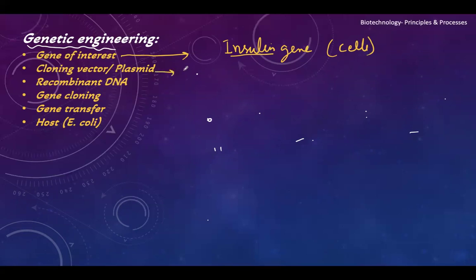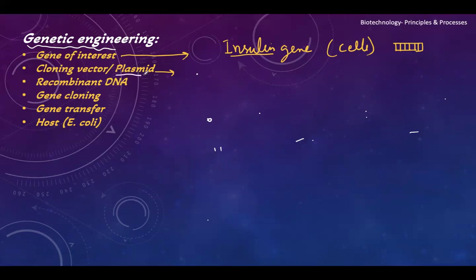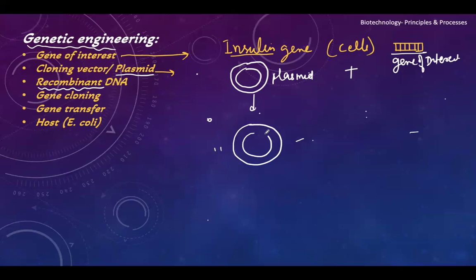Then we need to find a cloning vector. When I have to put this gene into bacteria, I need a cloning vector because this DNA cannot multiply and cannot remain in the bacteria by itself. That vector is nothing but a plasmid — these are self-replicating bodies. I have taken the gene of interest and the plasmid, also called a cloning vector. Next is forming the recombinant DNA — by taking two DNA from different sources and combining them together. I insert the gene of interest, which is the gene of insulin, into the plasmid. These are two DNA from different sources, and that's why it is called recombinant DNA.